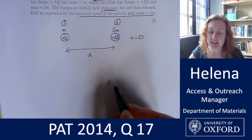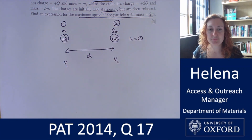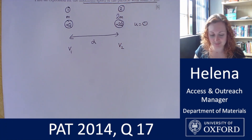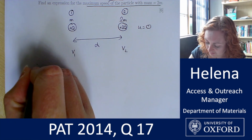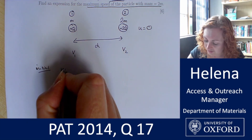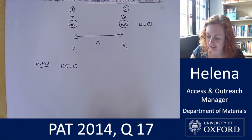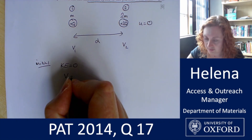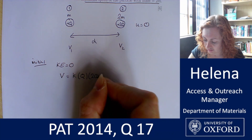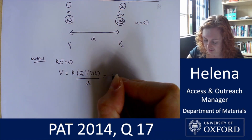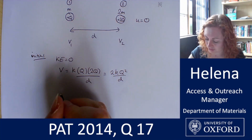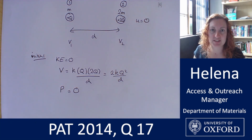I'm going to label these speeds as v1 and v2. Now let's start to think about this question — it's looking a bit like a collision question, just going in opposite directions. Thinking in terms of energy and momentum: initially, the kinetic energy is zero because both particles are stationary. The initial electrostatic potential energy, which I'll call V, is k times q times 2q divided by d, which gives us 2kq² over d. The initial momentum p is also zero — no velocities, everything's at rest.